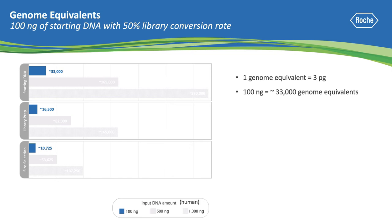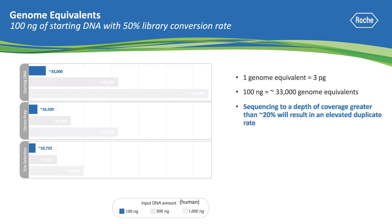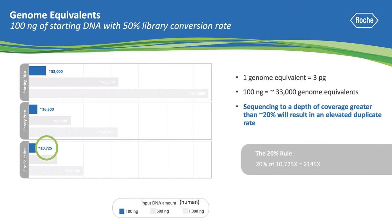Focusing on 100 nanograms, we have around 33,000 genome equivalents. With a 50% library conversion rate and size selection, we end up with 10,725 genome equivalents. If we follow the 20% rule, then we can estimate that we get 2,145x coverage without having to over-sequence and with a low duplicate rate.